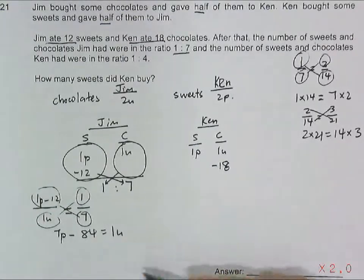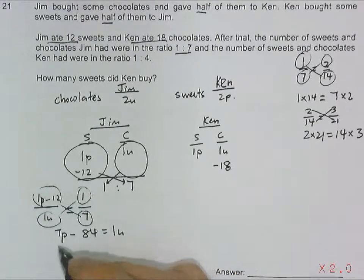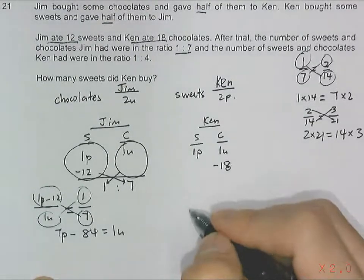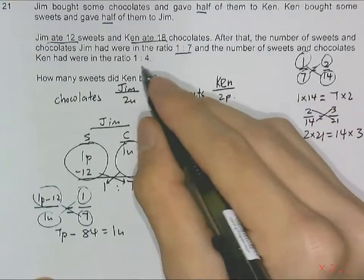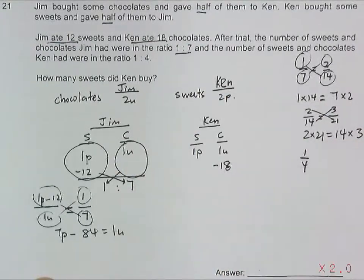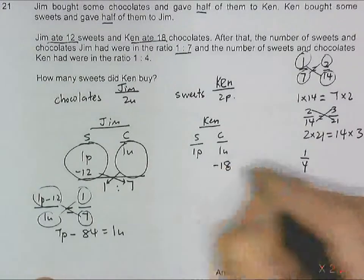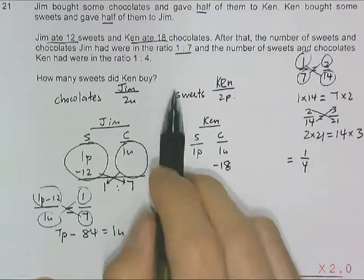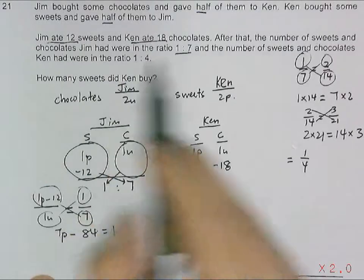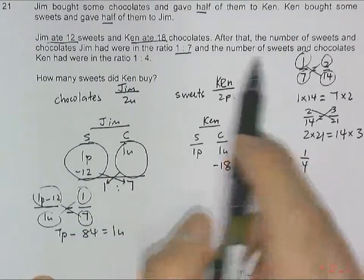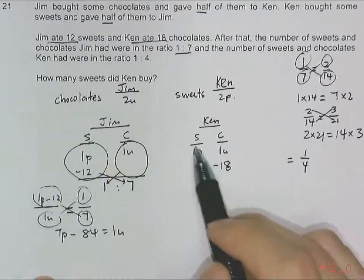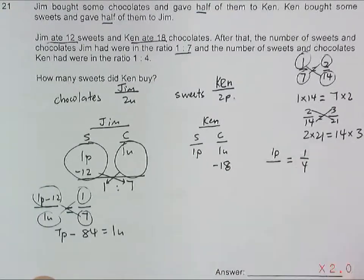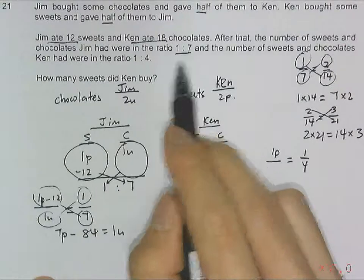Looking at the other side, the same concept: 1 is to 4, just like 1 quarter. To cross multiply means that the 1 accounts for the number of sweets. Ken's sweets still remains as 1 part, while the 4 portions comes from the chocolates.